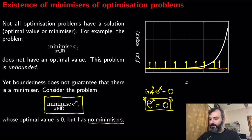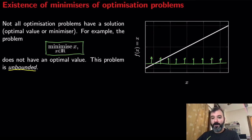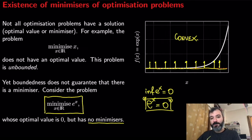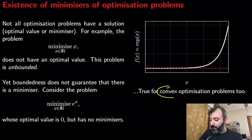This is a convex problem — this is a convex function. The take-home message is that if you have a convex problem, don't rush into the conclusion that the function has an infimum or that it has a minimizer. It might not be the case. Here are two very simple examples: f(x) = x is unbounded; f(x) = e^x is bounded but has no minimizers. This is a useful thing to keep in mind. Not all optimization problems have a minimizer, not all of them have an infimum, and this is also true for convex problems.